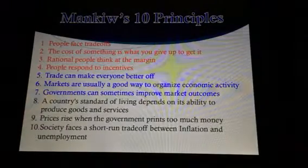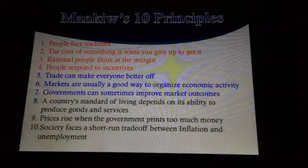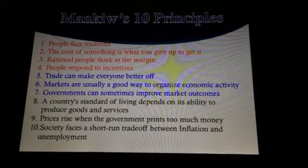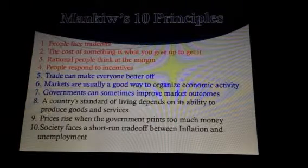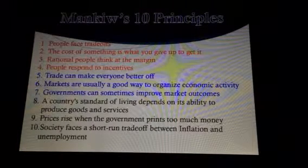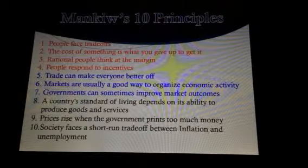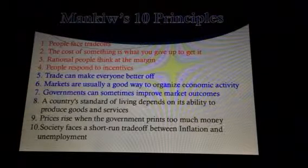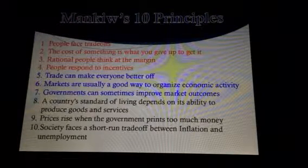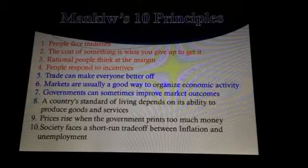The three categories are: how people make decisions, how people interact, and how the economy functions as a whole. The first four principles are in the category of how people make decisions, the next three cover how people interact, and the last three cover how the economy functions as a whole. I am going to focus on the middle three.